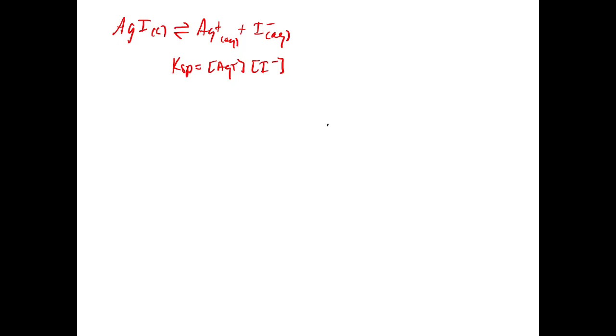So for example, in this problem, if we were to create an ICE table, the two entries we would have would be silver plus and I minus at the top. And then we would have I, C, and E.